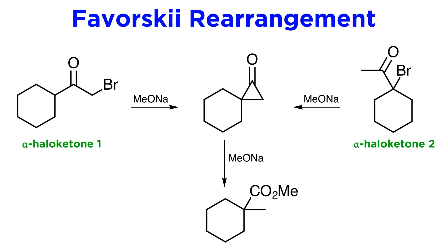This scheme illustrates two other facts. First, the reaction works for alpha-bromo ketones as well as chloro ketones, although generally in lower yield. And second, when anhydrous alkoxides are used as bases, esters are obtained instead of the carboxylate salt.